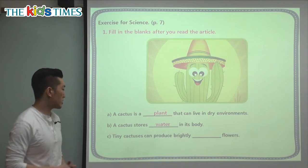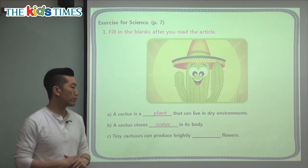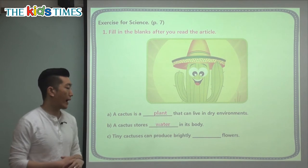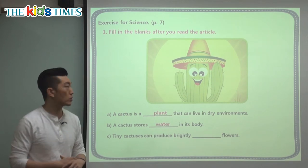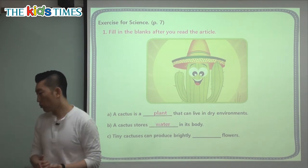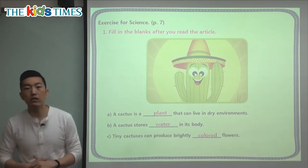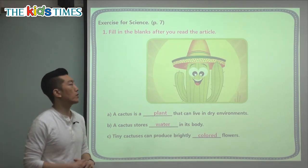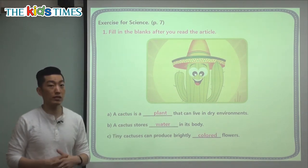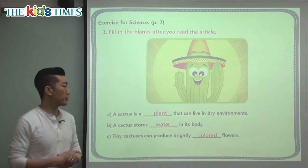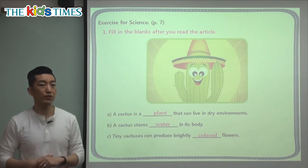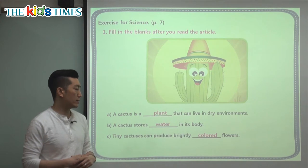The last question: tiny cactuses can produce brightly what flowers? We need an adjective. The answer is brightly colored. This cartoon cactus doesn't have flowers on it, but in the previous picture we saw that flowers can grow on cactuses.